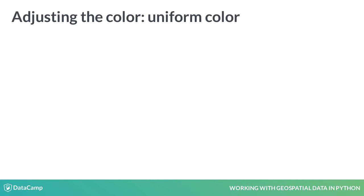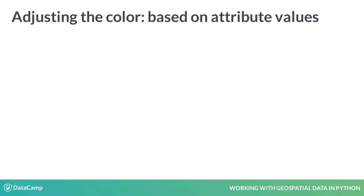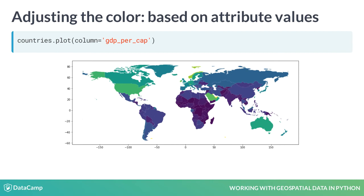To start, we will see two ways to adjust the color of the plotted geometries. First, we can specify a uniform color with the color keyword. For example, here we specify that all the countries should be plotted in red. Alternatively, you often want to color each polygon depending on one of the attributes of those geometries. For that, we can pass the column name of this attribute to the column keyword of the plot method. For example, here we color the countries based on its GDP per capita.